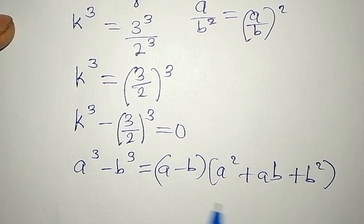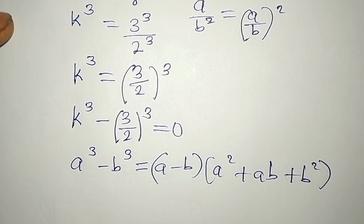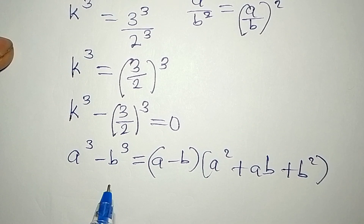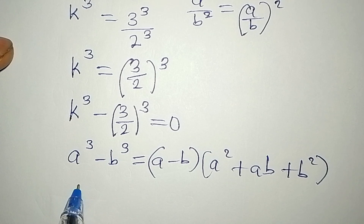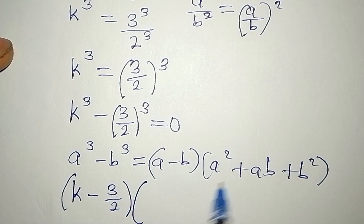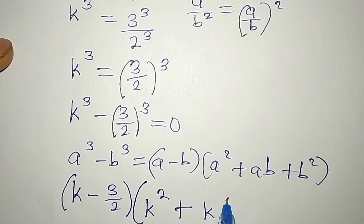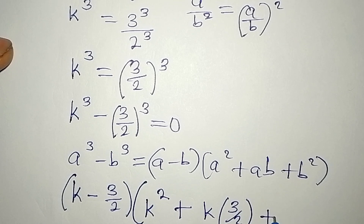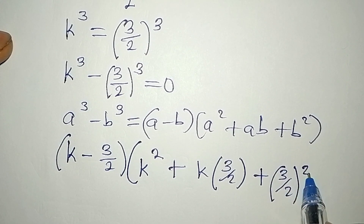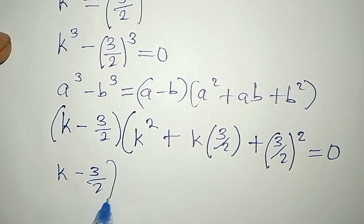In this case our a is k and our b is 3/2, so let's substitute directly. We have (a − b) which is (k − 3/2) in the first bracket, then in the second we have a² which is k², plus ab which is k multiplied by 3/2, plus b² which is (3/2)², and it equals zero.